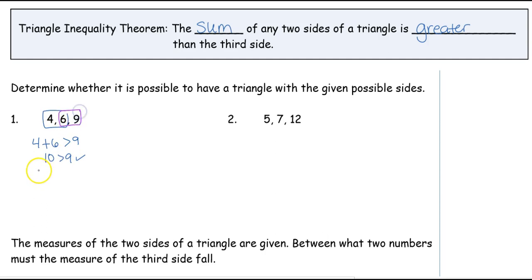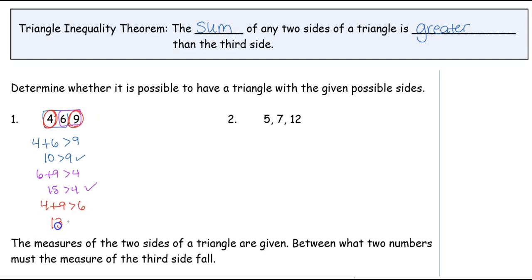We look at sides 6 and 9 — they have to be greater than the third side of 4. And 15 is greater than 4, so we're good there. Then 4 and 9 together have to be greater than the third side of 6. And 13 is greater than 6, so the answer is yes. With these three pieces I can form a triangle because any two sides I choose will always add to be greater than the third.